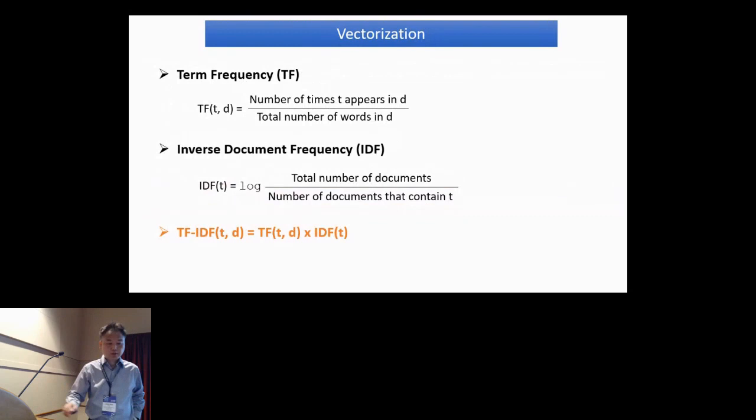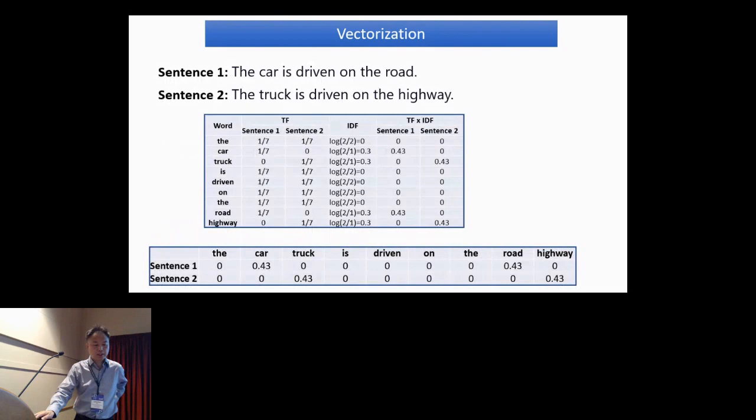For vectorization, I want to introduce two terms: Term Frequency (TF) and Inverse Document Frequency (IDF). TF is the fraction of the number of times a word t appears in a document d to the total number of words in d. But this TF is frequency-based and does not consider rare words. To make up for that, inverse document frequency IDF is used for complementary information. TF times IDF is used as quantitative features for modeling.